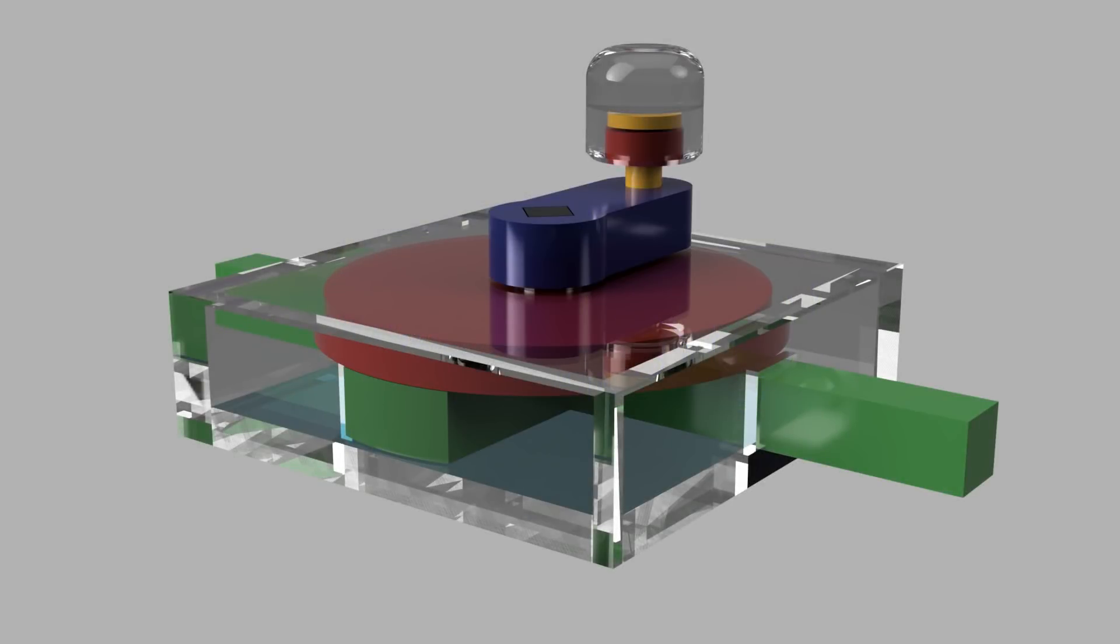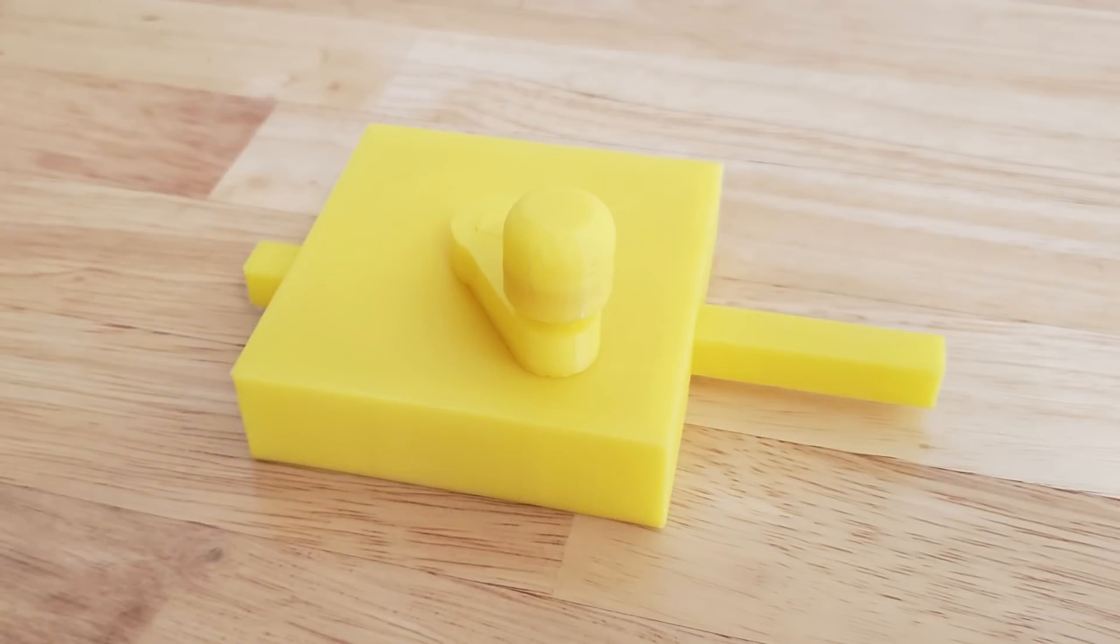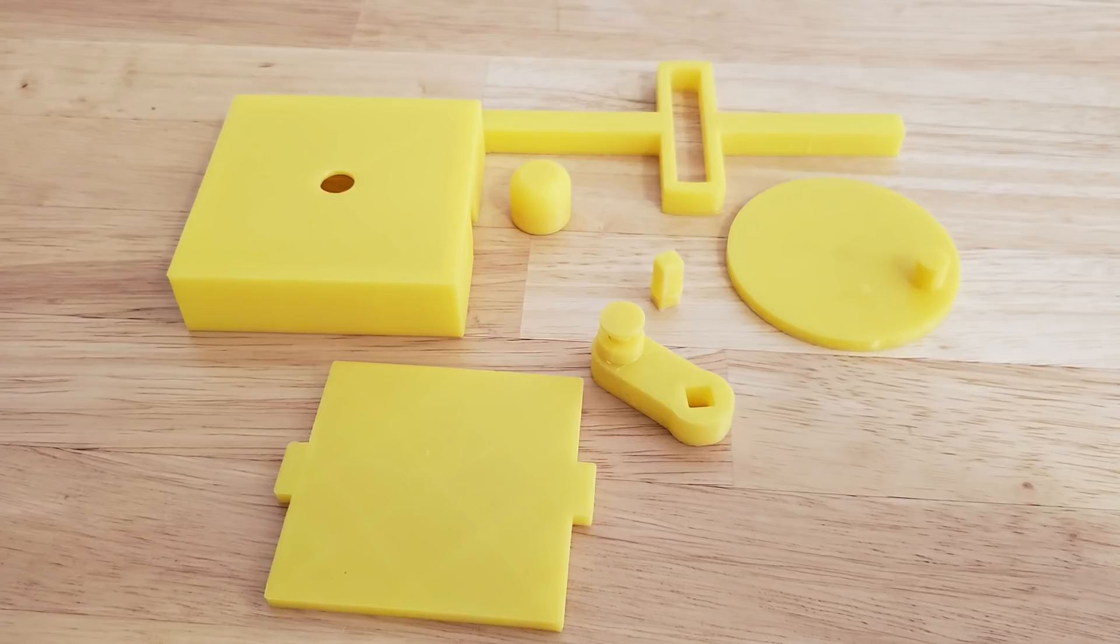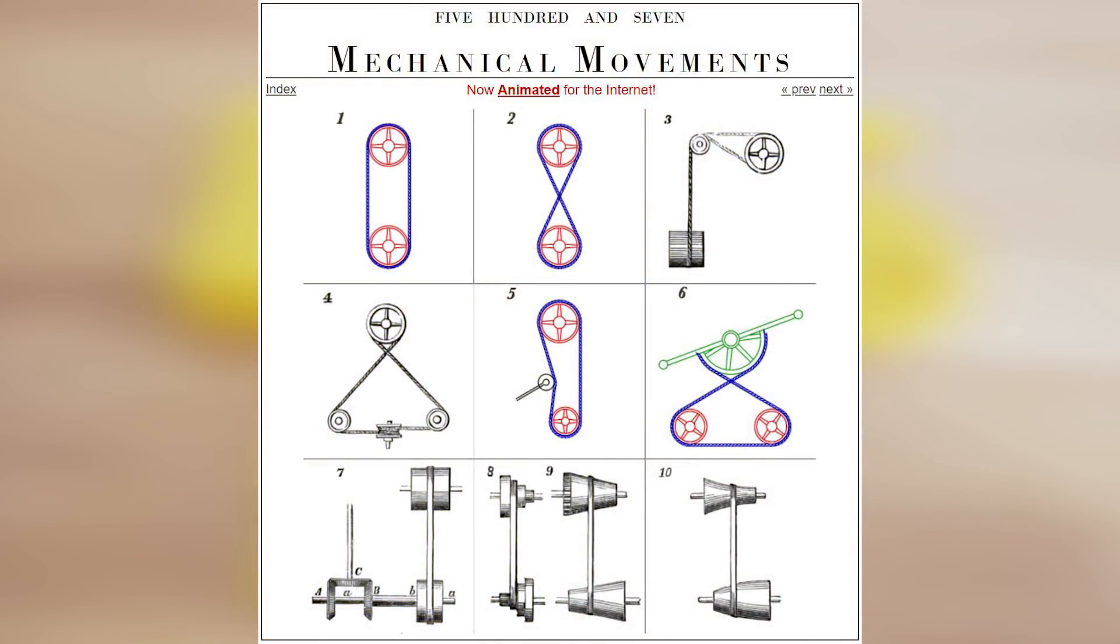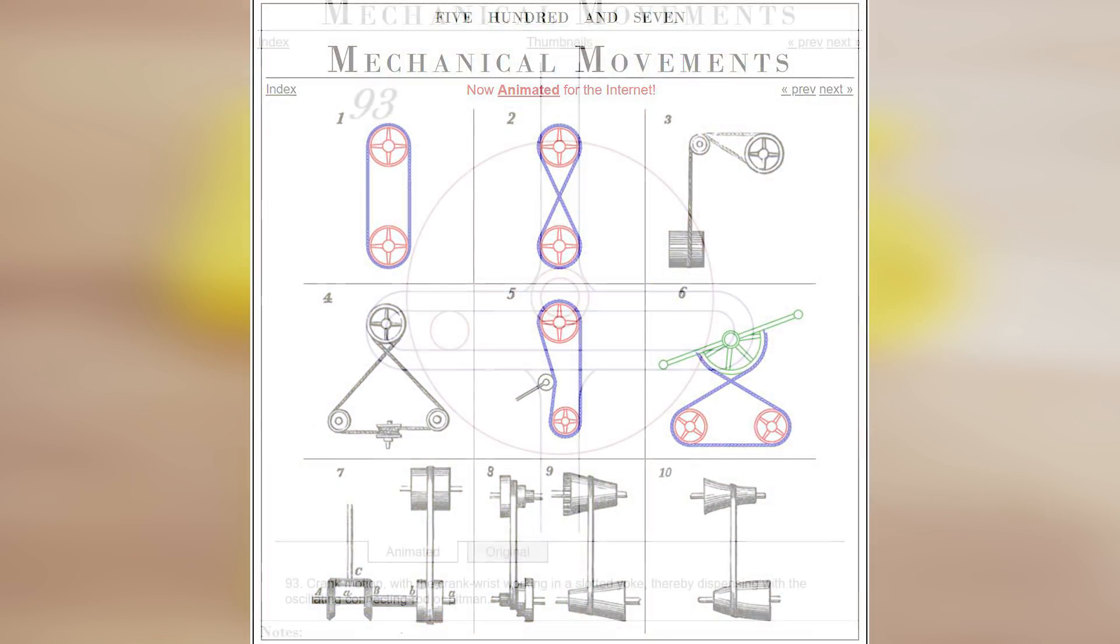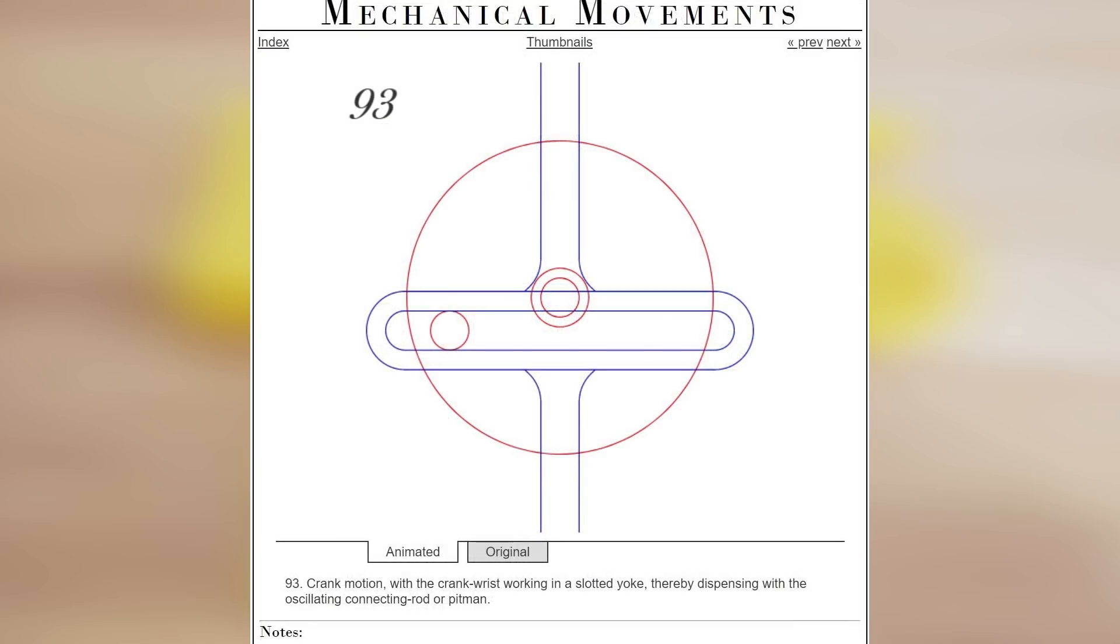Today's video is a design review of a rotational to linear motion machine that I made. It was inspired by machine number 93 from 507 Mechanical Movements. The name used for it there is a slotted yoke. 507 Mechanical Movements has a lot of cool mechanisms, so check the description for a link if you're interested.